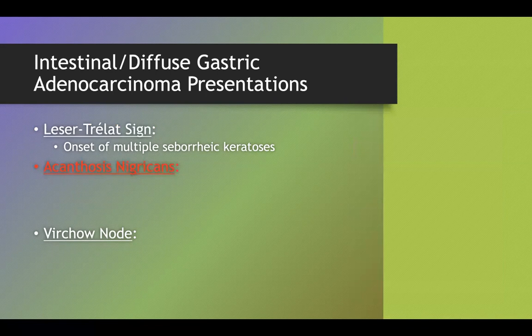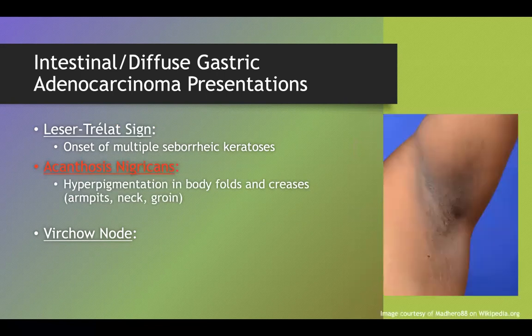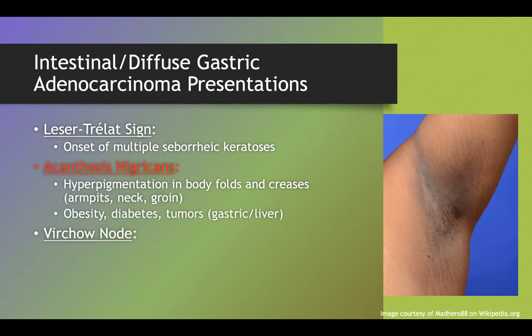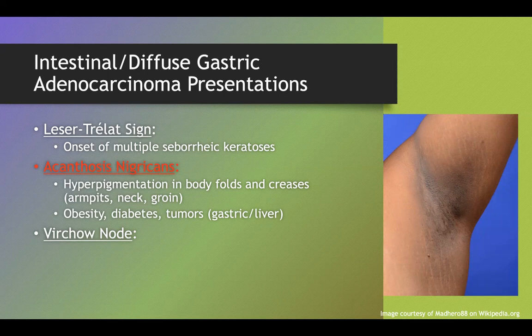Acanthosis nigricans is a hyperpigmentation in the body folds and skin creases — seen on the neck and armpits. It's also associated with obesity, diabetes, insulin resistance, and polycystic ovarian syndrome, so it's not exclusive to cancer. But if an older patient with risk factors is presenting in a way that sounds like cancer and shows this finding, strongly consider gastric adenocarcinoma.